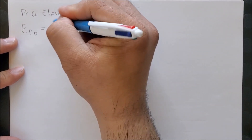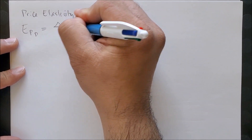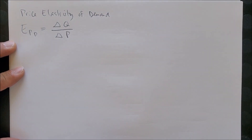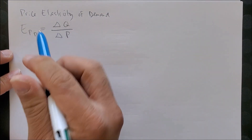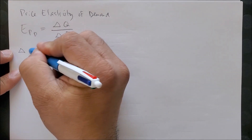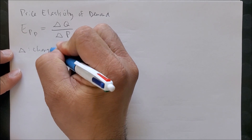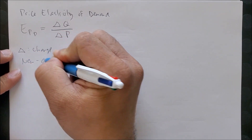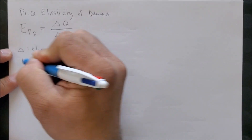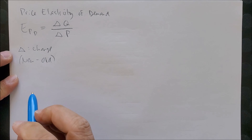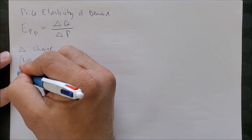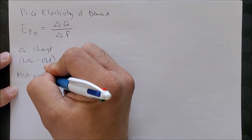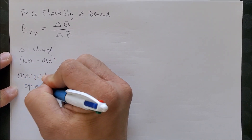We know that once again we have the change in quantity over the change in price. Delta represents change — new minus old. We can also label this as the midpoint equation.